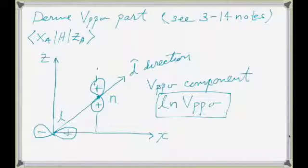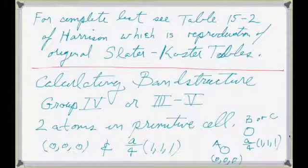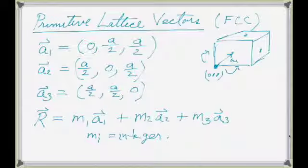We went through all the matrix elements we're going to need, and then defined what our primitive lattice vectors are. Now we're doing this in 3D — before we were working on a 1D crystal. Now we have a 3D crystal, so there are three primitive lattice vectors A1, A2, and A3 that define the periodicity in 3D space.